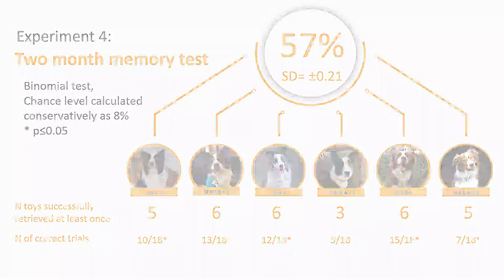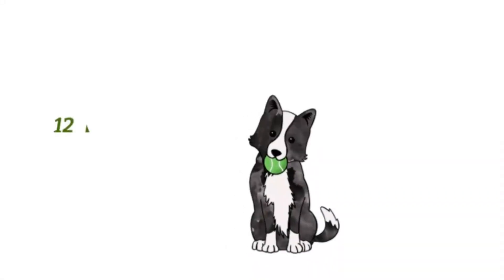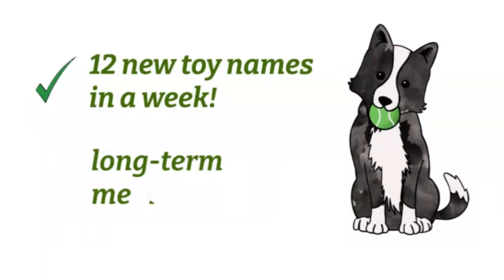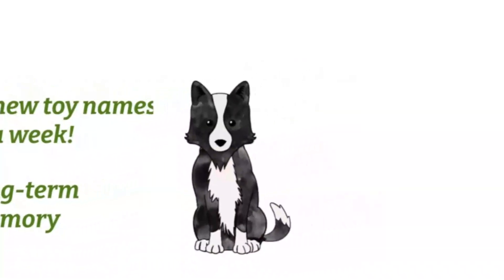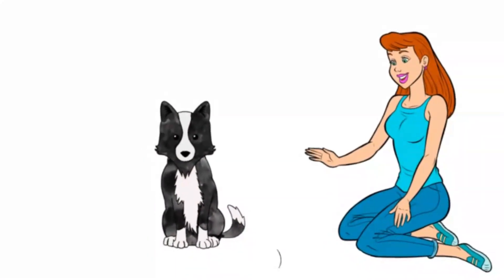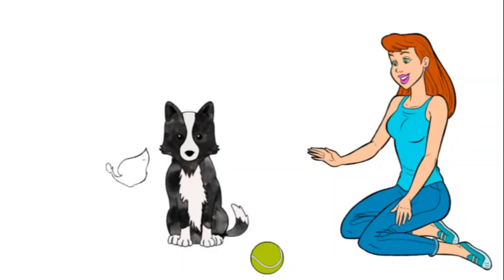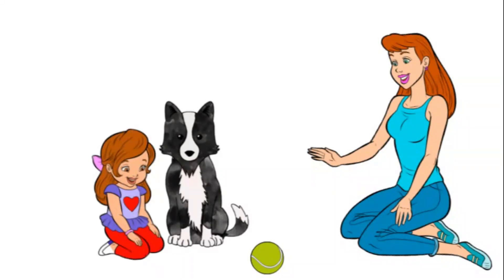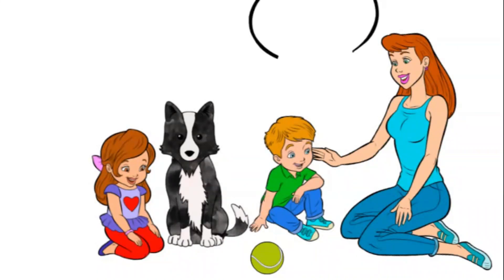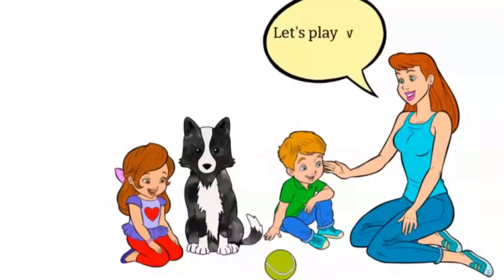We found that the dogs not only could learn the names of up to 12 new toys in 1 week, but also could remember most of those for up to 2 months. This rapid learning occurred during natural social interactions and did not require intensive training. Not only did the dogs demonstrate a learning speed which is comparable to that of 18-month-old infants, but they also did so under a learning context which is in many aspects similar to the natural interactions occurring between adults and infants on a daily basis.